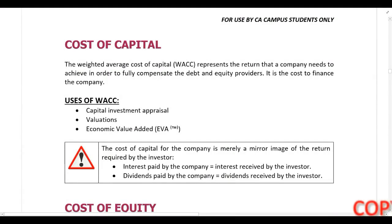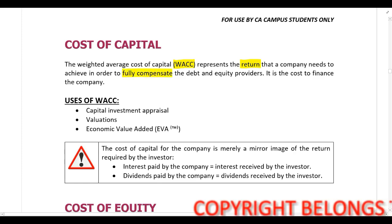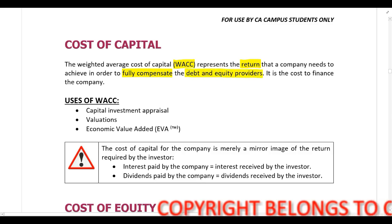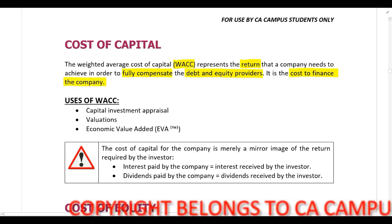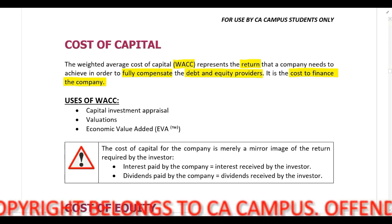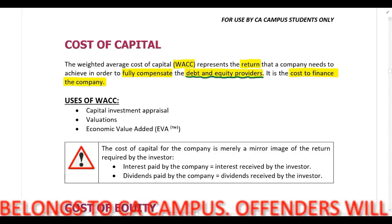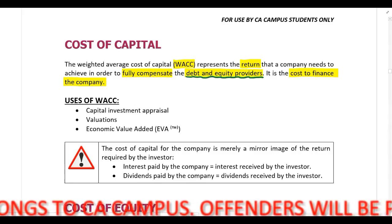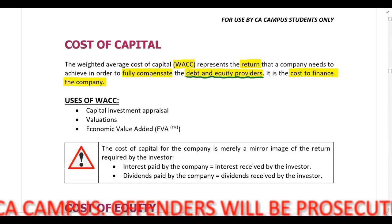The weighted average cost of capital (WACC) is the return that the company needs in order to fully compensate the debt and equity providers. In other words, it is the cost to finance the company. It is the minimum return that the company must make so that they can compensate the debt and equity providers. If they have a return that is less than the WACC, they won't have enough money to fully compensate them.